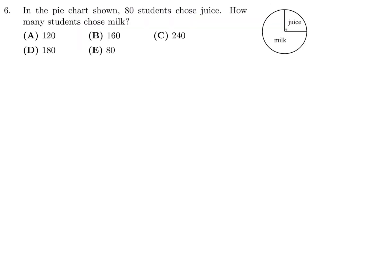In the pie chart shown, 80 students choose juice. How many students choose milk? Well, this symbol means 90 degrees. And 90 degrees refers to one quarter of a circle. So juice is chosen by one quarter. So that means milk is chosen by three quarters of the people involved. So if one quarter is equal to 80,